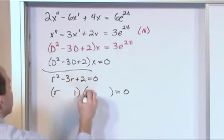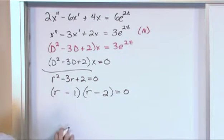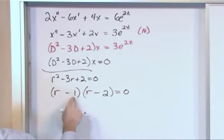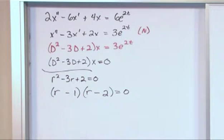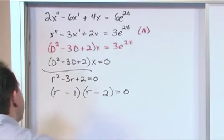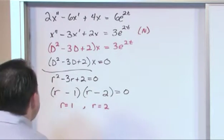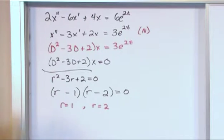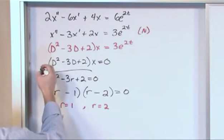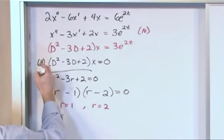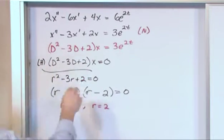r minus 1 times r minus 2 equals 0. Makes sense, right? Because negative r minus 2r gives me this, and this times this is going to give me this. So I factored it. So what I have here is that one root equals 1 and one root equals 2. So I have everything I need to construct the solution to the related homogeneous equation, which is this guy. We call this the related homogeneous equation because we just set it equal to 0.